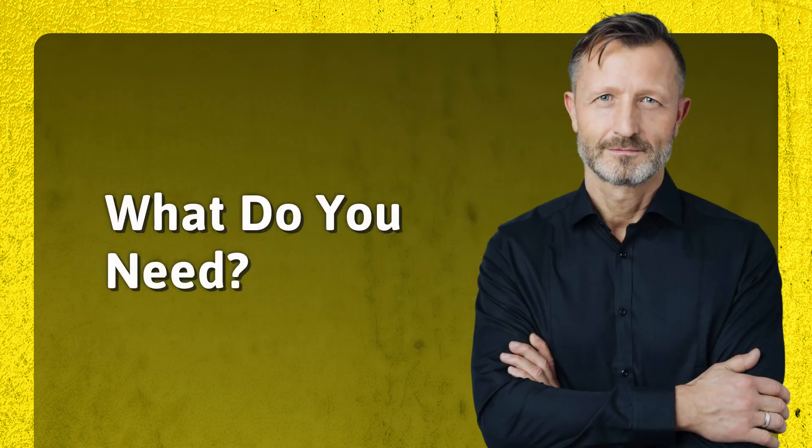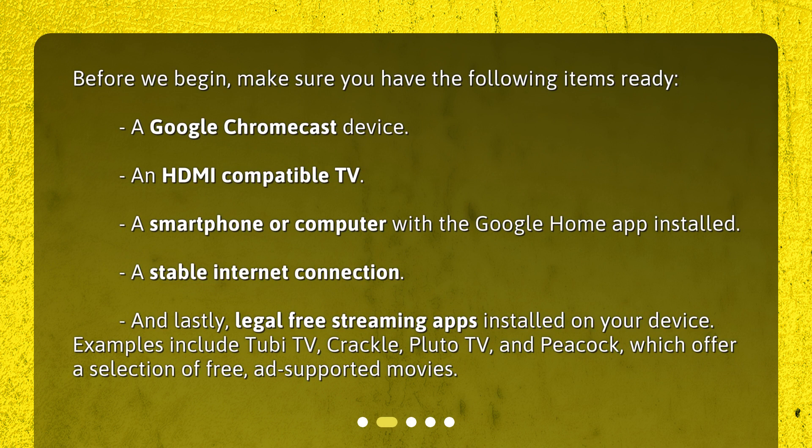What do you need? Before we begin, make sure you have the following items ready: a Google Chromecast device, an HDMI-compatible TV, a smartphone or computer with the Google Home app installed, a stable internet connection, and legal free streaming apps installed on your device.